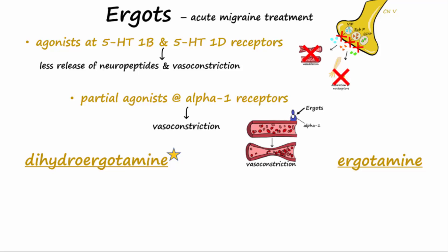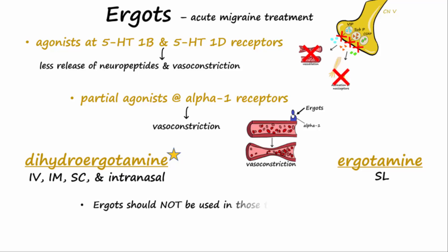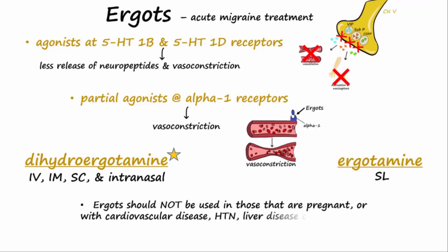Dihydroergotamine is available for intravenous, intramuscular, and subcutaneous, as well as intranasal administration. Ergotamine may be given sublingually. Ergots should not be used in those that are pregnant or with cardiovascular disease, hypertension, liver, or kidney disease.